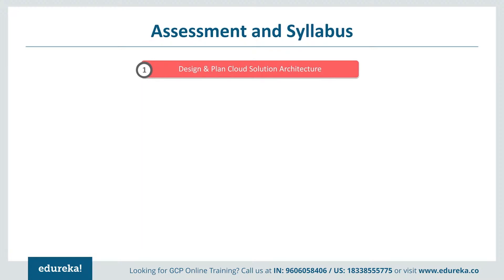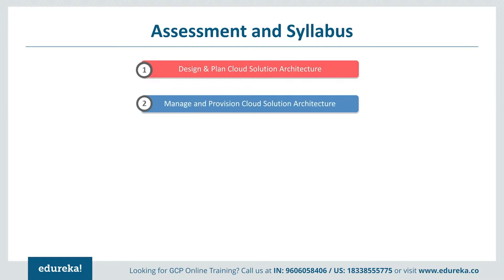The first section of the Cloud Architect syllabus is designing and planning a cloud solution architecture. One should be good at designing a solution infrastructure that meets both business and technical requirements, covering topics such as business use cases, product strategies, cost optimization, supporting the application design, integration, and trade-offs. Designing network, storage, and computing resources is also included, along with on-premises to multi-cloud integration, identification of data storage needs, mapping to storage systems, data flow diagrams, migration licensing, network and management planning, and proof of concept.